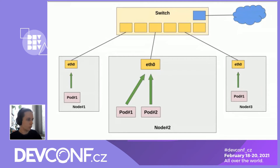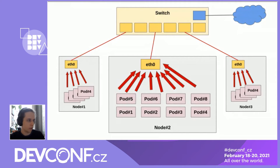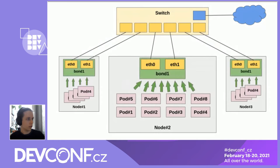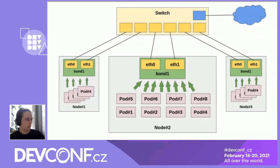If we start more pods on these nodes — as many as can fit — they may generate enough traffic to saturate the network interface, which doesn't have enough throughput to carry it all. Applying the same logic as for high availability, we introduce a second network interface and aggregate both using a bond interface, which can aggregate multiple interfaces to either increase throughput or provide active-backup safety. Now all pods can communicate over the network.